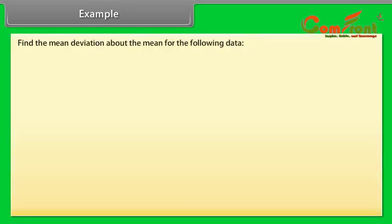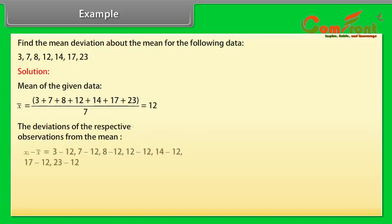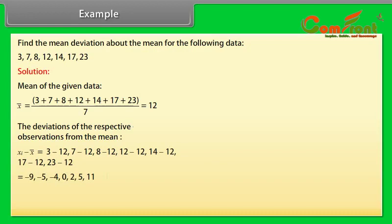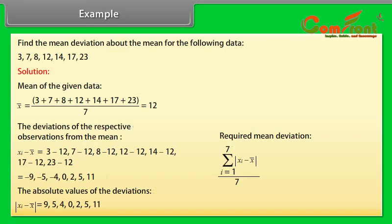Example: Find the mean deviation about the mean for the following data. The mean of the data is X̄ = 12. After that we find the deviations of the respective observations from the mean as Xᵢ minus X̄. Then the absolute values of |Xᵢ − X̄| are 9, 5, 4, 0, 2, 5, 11. Finally, the mean deviation is found by summing these from i=1 to 7 and dividing by 7, giving 5.14.